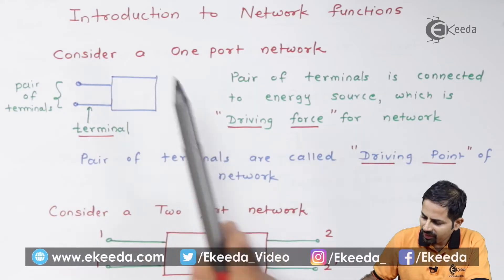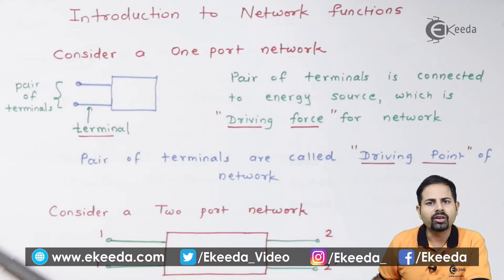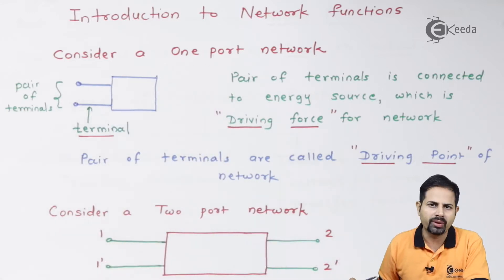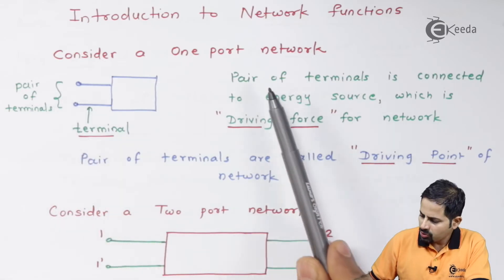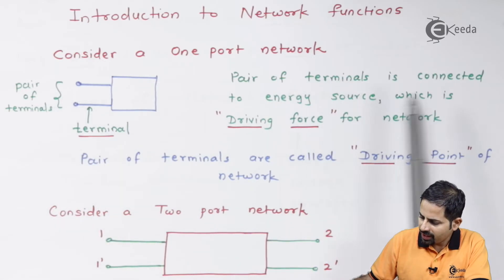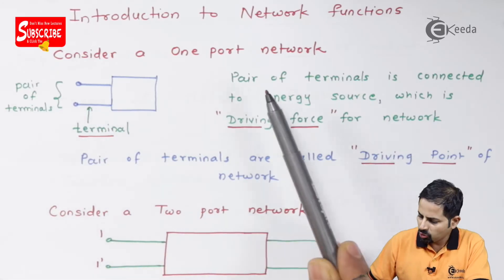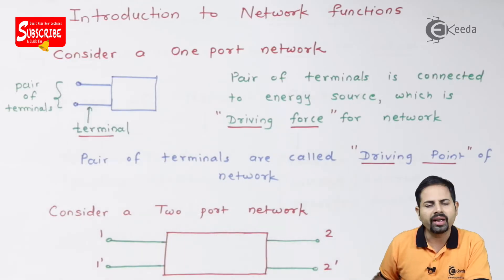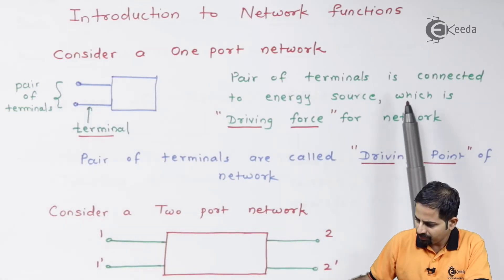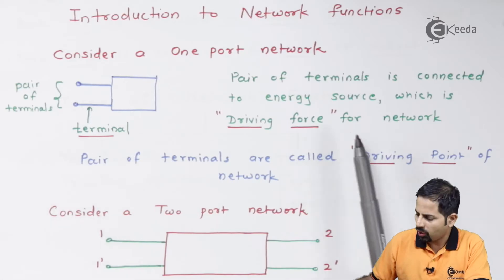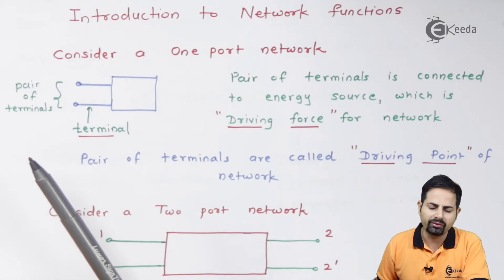Here I have considered a one-port network. A one-port network has a pair of terminals where you can attach the input. This pair of terminals is connected to an energy source. No network can work without an energy source, so this pair is connected to an energy source which is called the driving force for the network, because it drives that network.